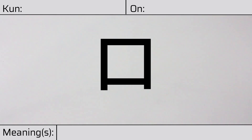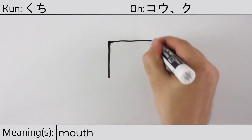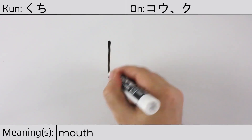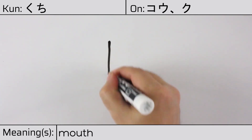Welcome to this lesson on Japanese kanji. Today, we'll be discussing this character. This kanji has kunyomi or Japanese reading of kuchi, and it has onyomi or Chinese readings of kau or ku. This character has the meaning mouth. Here is the stroke order. This character has no radicals, but is a radical in other kanji. You can remember this kanji by thinking of it as a mouth which is wide open in surprise.